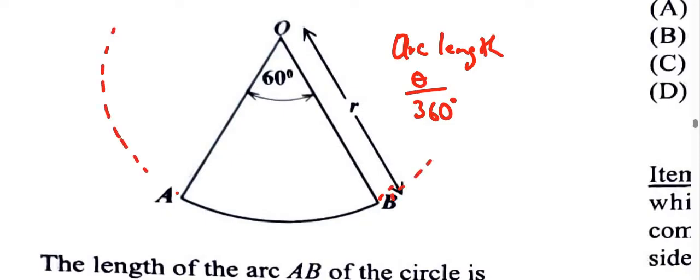It's part of a circle. So it's theta over 360 times... Arc length is part of the circumference. So looking at this arc here going from A to B, this is part of the circumference that goes all the way around.